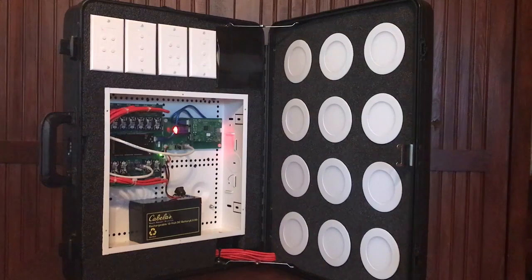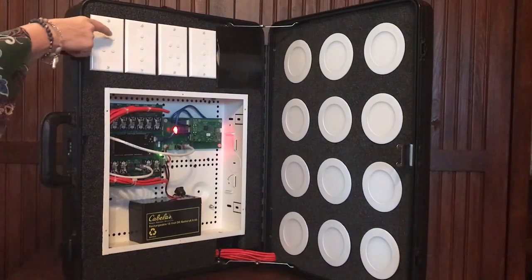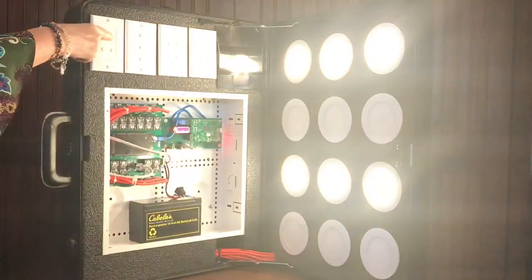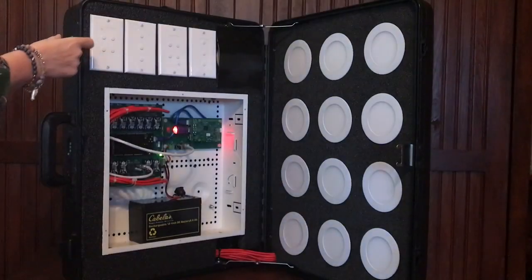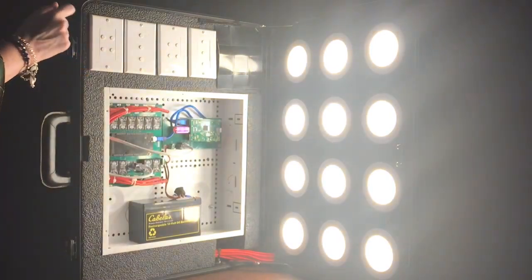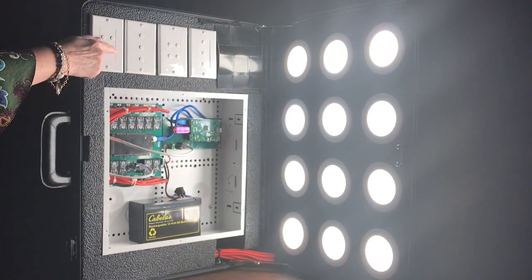Button 2 is programmed the same way, but it turns on every other light. Button 3 we programmed as a simple on switch. And button 4 we made as a simple off switch.